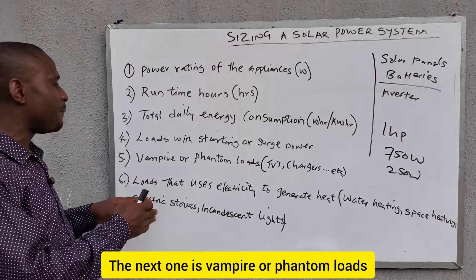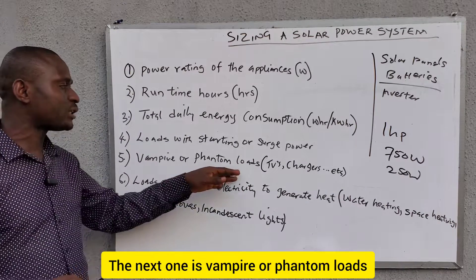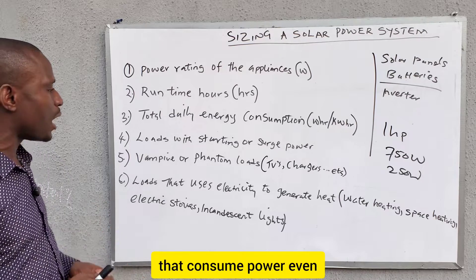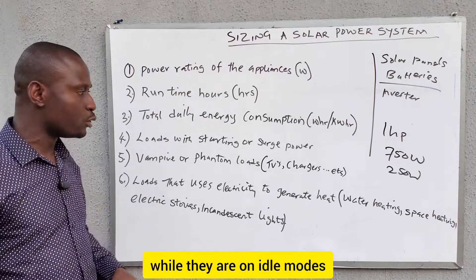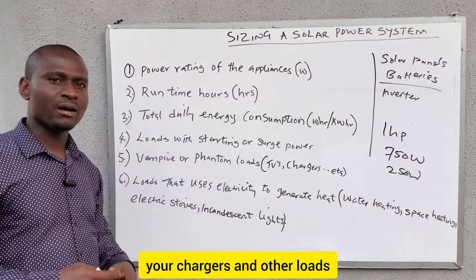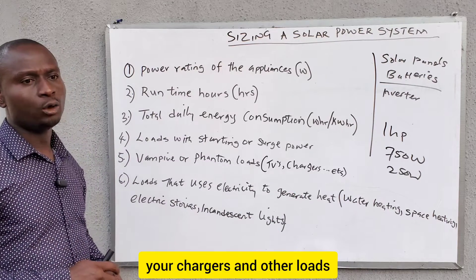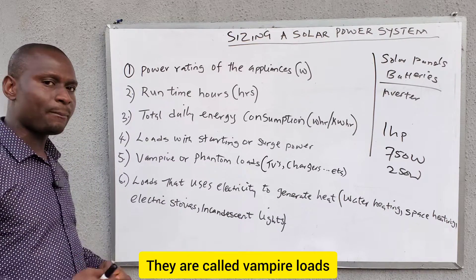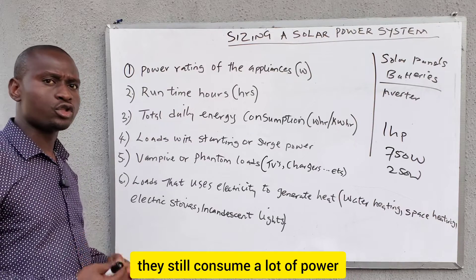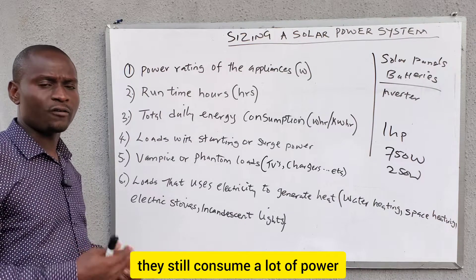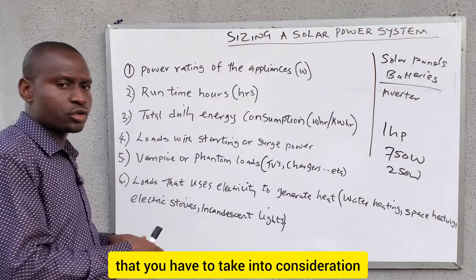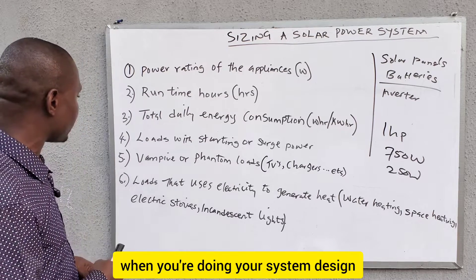The next consideration is vampire or phantom loads. These are loads that consume power even while they are in idle or standby mode — loads like TVs, chargers, and others. Even when you put them on standby, they still consume power. You have to factor this in and take it into consideration when you are doing your system design.